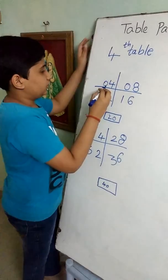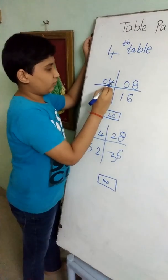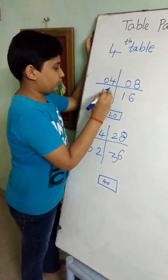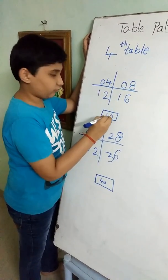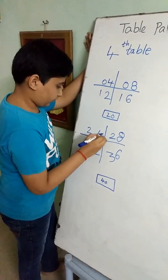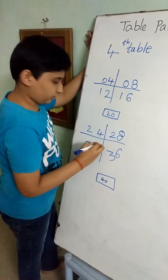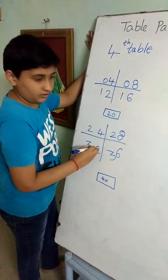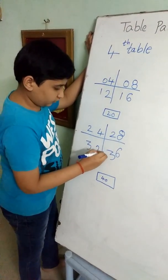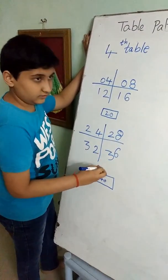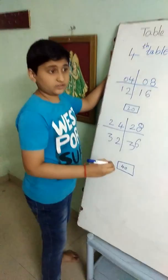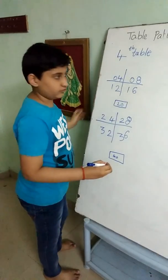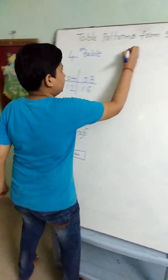4 ones are 4, 4 twos are 8, 4 threes are 12, 4 fours are 16, 4 fives are 20, 4 sixes are 24, 4 sevens are 28, 4 eights are 32, 4 nines are 36, 4 tens are 40. Now we will discuss about the 5th table.